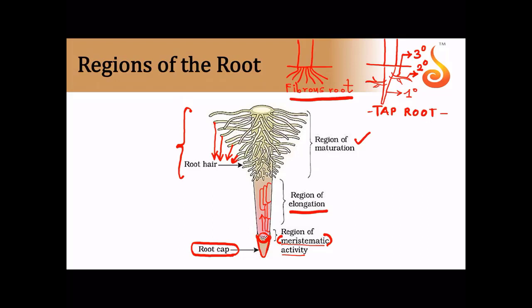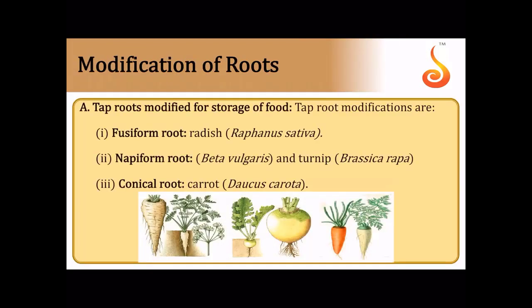Now moving to modification of roots. The tap root has a primary mother axis branching into secondary and tertiary roots. If we look at tap root modifications for storage of food, some tap roots become conical in shape, as in carrot (Daucus carota) — this is called the conical root. In turnip and beetroot, the base is extremely swollen and then tapers suddenly — this is called the napiform root, seen in Beta vulgaris and Brassica rapa.